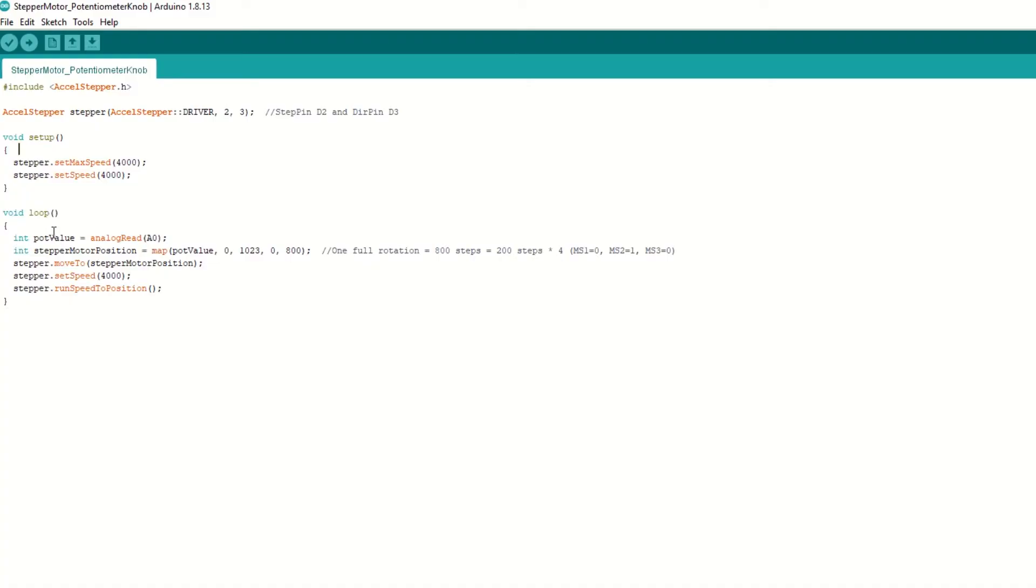Let's see how we can use potentiometer as knob. The stepper motor will follow the potentiometer position. Read the potentiometer value using analogRead function. Map this value to 0 to 800 steps, which is one full rotation. Now call moveTo function with this position and set the speed. Please remember that we need to always call setSpeed function after moveTo function to run stepper motor with constant speed. Then call runSpeedToPosition function.